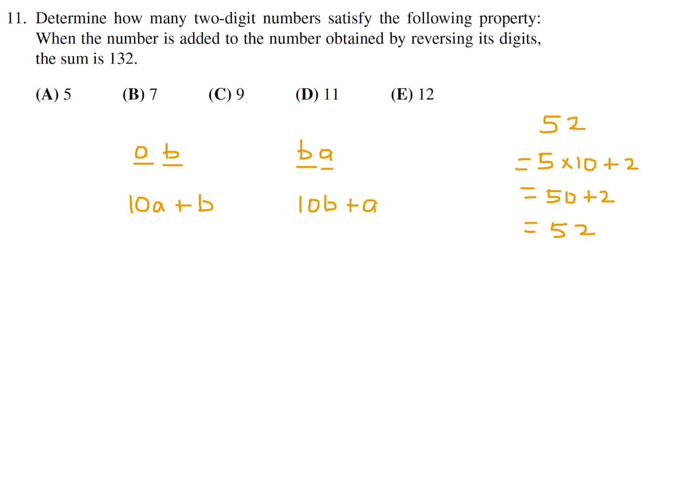When you take these two numbers and add them together, it equals 132. Let's add like terms. We get 11A plus 11B equals 132. Divide through by 11, and you get A plus B equals 12.